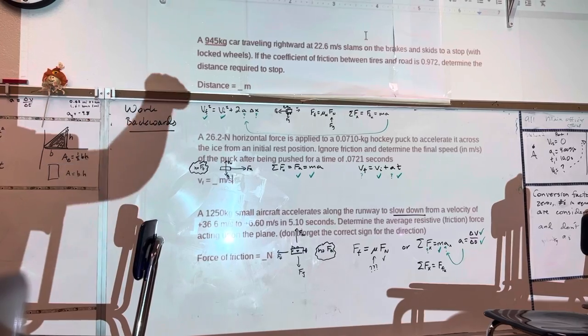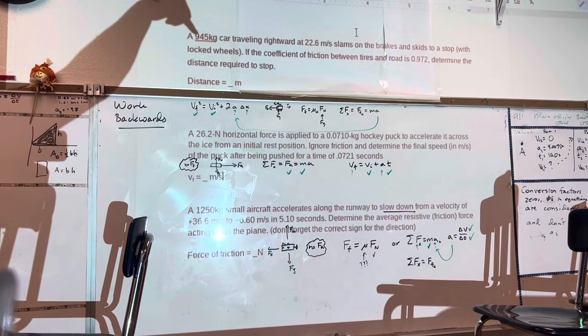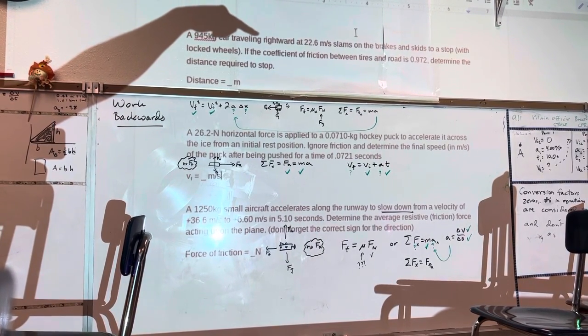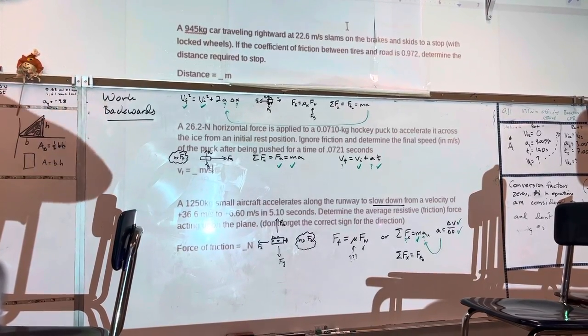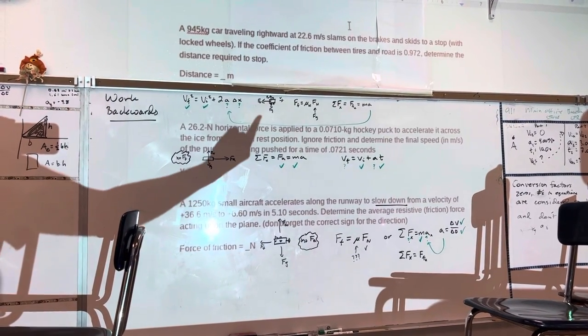First one says, a 945 kilogram car traveling rightward at 22.6 meters per second slams on the brakes and skids to a stop. So what would that look like? That would look like this.